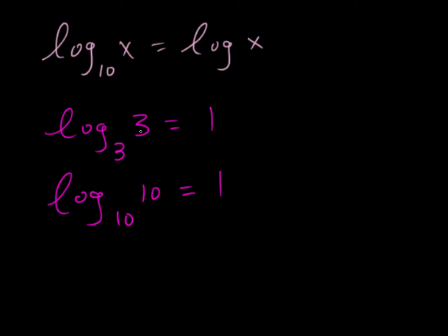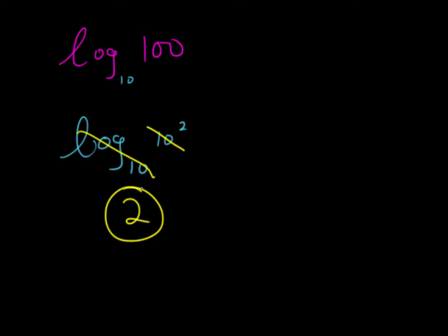For this first problem, log of 100, our goal is to write 100 as 10 raised to an exponent. If we do log base 10 and then write the 100 as 10 squared, these go to 1 times 2, and so the answer is 2.